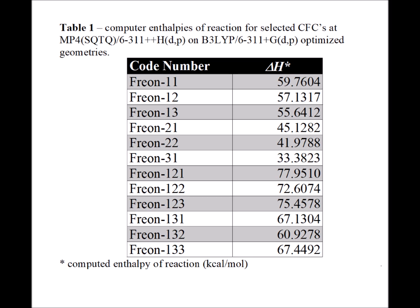In Table 1, we see a compilation of the 12 freons that we examined and the calculated enthalpies of reactions for these isodesmic reactions, which correspond to the reactions where we actually have the formation of the atomic chlorine free radical. We notice that freon 31 has substantially the lowest enthalpy of reaction, which means we predict this would be the freon that would most easily break up to yield atomic chlorine in the stratosphere and thereby affect ozone.